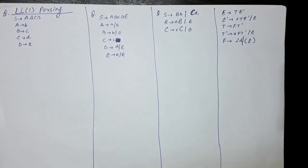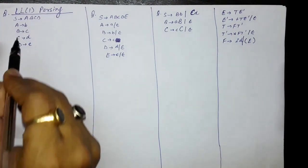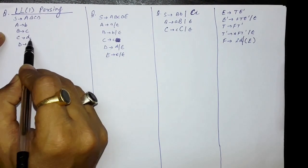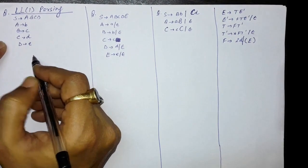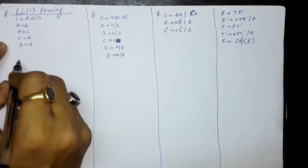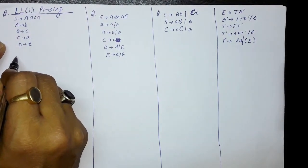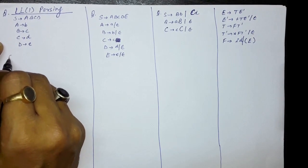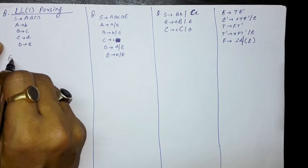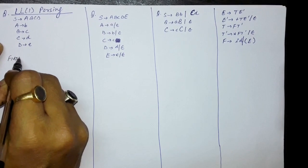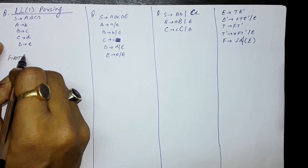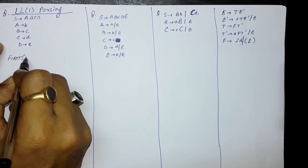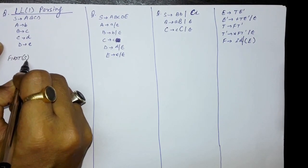Let's say the first grammar is S produces ABCD, A produces small b, B produces small c, C produces small d, and D produces e. So we have to find out the FIRST and the FOLLOW for all the non-terminals here. The FIRST means when you are deriving a string with the help of a non-terminal, what is the first symbol which may come?